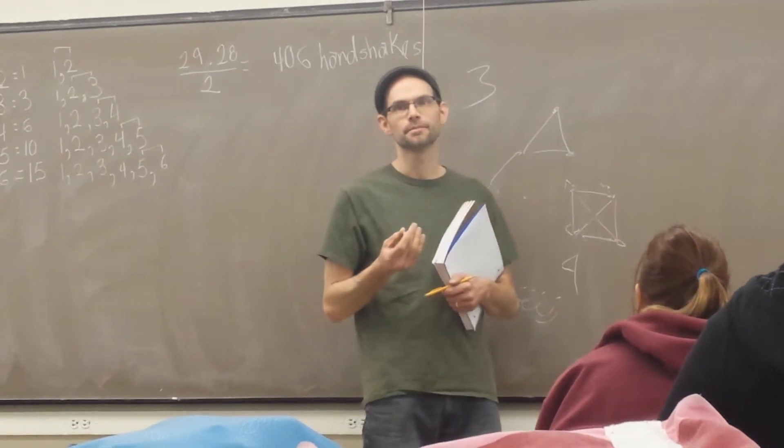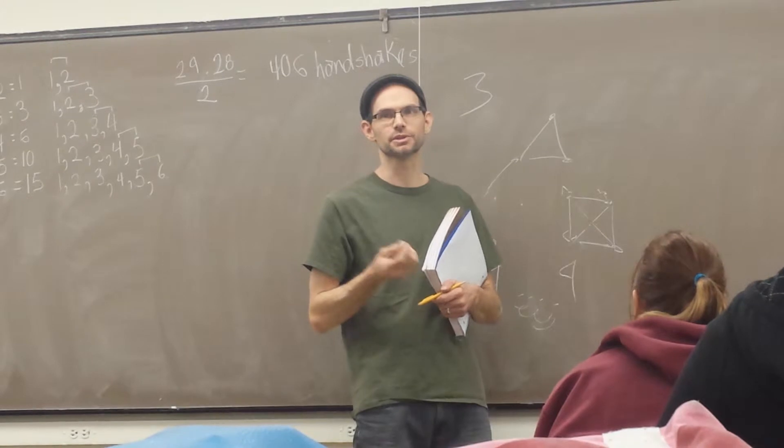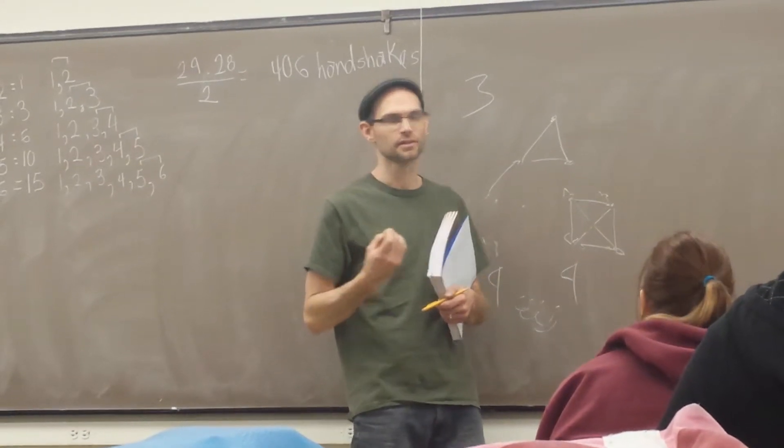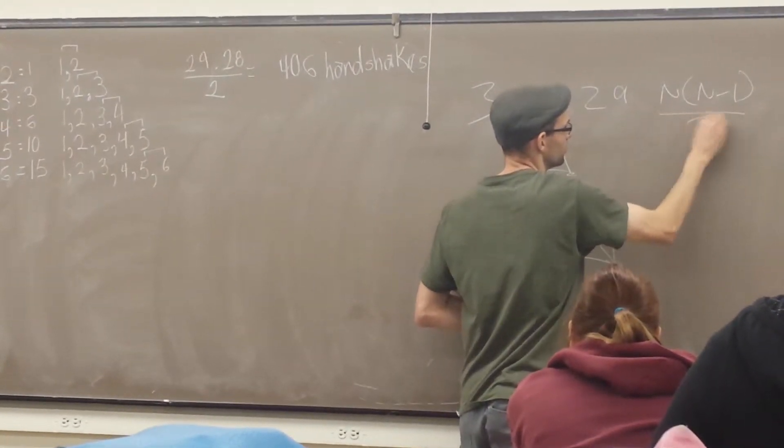So you said n, what is n though? The number in question. Number of people, so in this case 29. So your total population. Right, so for our solution it's n minus 1 over 2.